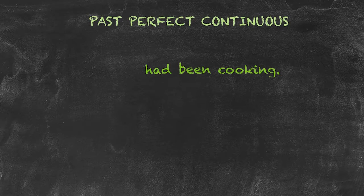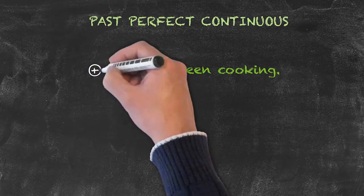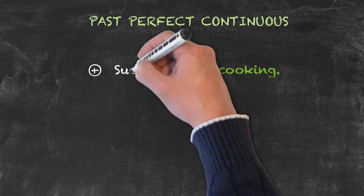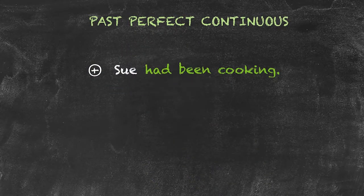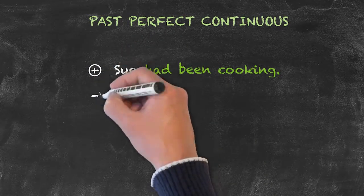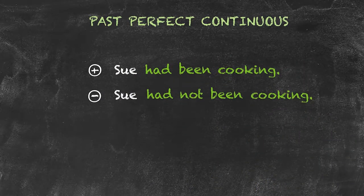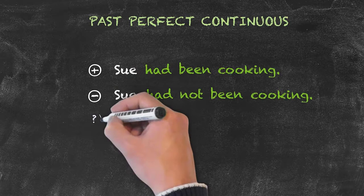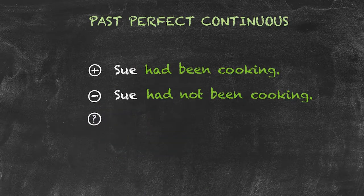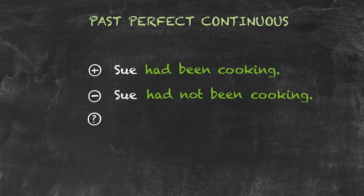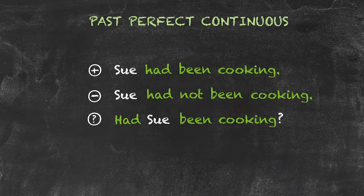So, for positive sentences, we would start with our subject. Here, it's Sue. Sue had been cooking. A negative sentence would be, Sue had not been cooking. And in order to ask our question, again, that inversion of the subject and had, so it comes out, had Sue been cooking.